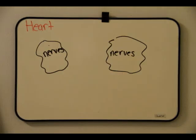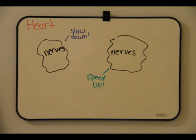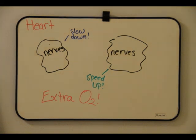Two sets of nerves affect heart rate: one slows it down and the other speeds it up. Heart rate increases during fever, exercise, and during the fight-or-flight response from epinephrine. This is an adaptation that enables the circulatory system to provide additional oxygen to muscles at work.